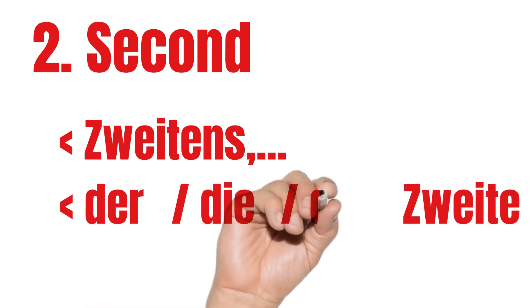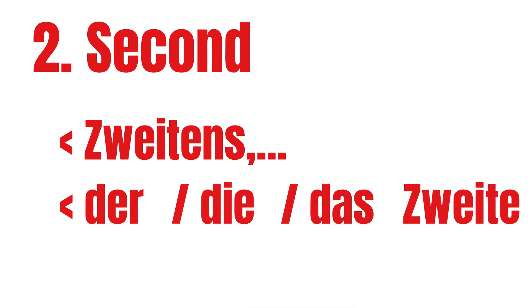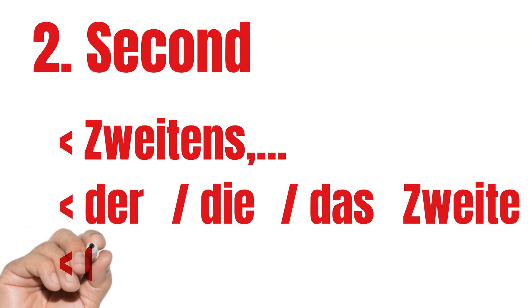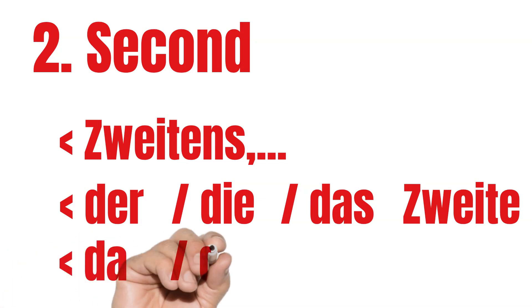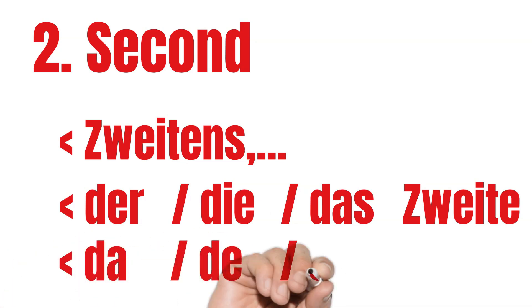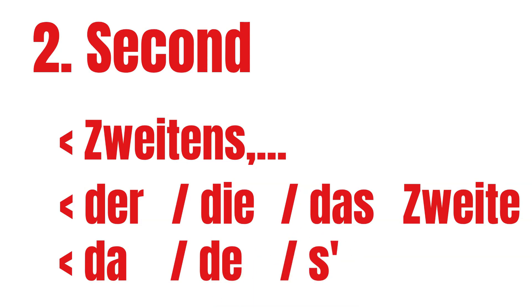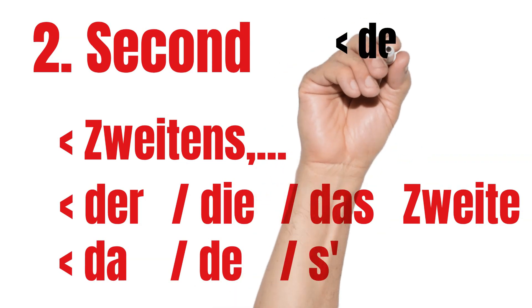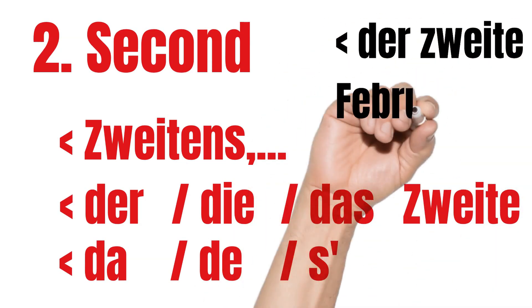For numbered lists, second means Zweitens. In spoken Austrian German, you often hear the following forms: der Zweite, die Zweite. With months, February 2nd is der Zweite Februar.